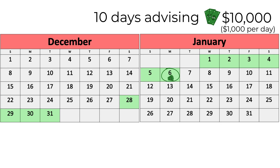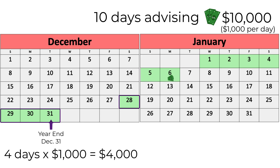By the end of the year on December 31st, we have provided four days of advisory services and earned $4,000 of revenue. Therefore, we need an adjusting entry to record the revenue we have accrued on the contract, even though we have not yet been paid.